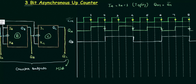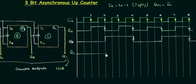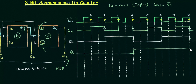For QC, we don't look at the original clock or QA — we look at QB, because QB is acting as the clock for flip-flop C. We only consider the falling edges of QB. QC is low initially and at the first falling edge of QB it goes high due to toggling, since JC = KC = 1.